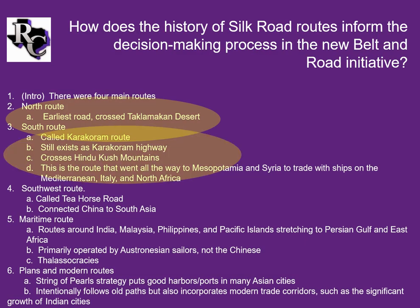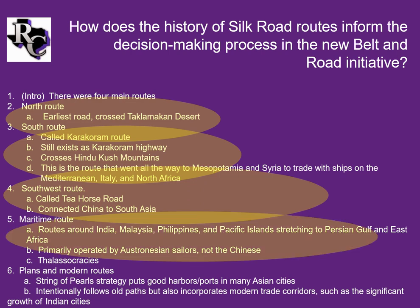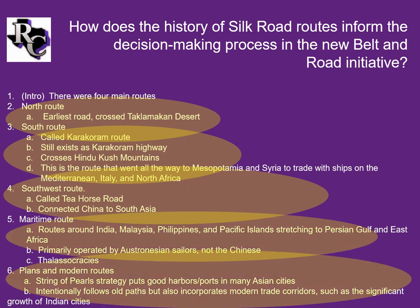Looking through the main topics, four main routes in ancient times were called the Silk Road. One last subtopic covers the plans for modern routes. Notice the research question is at the top of the page — keeping it close helps you focus on it.